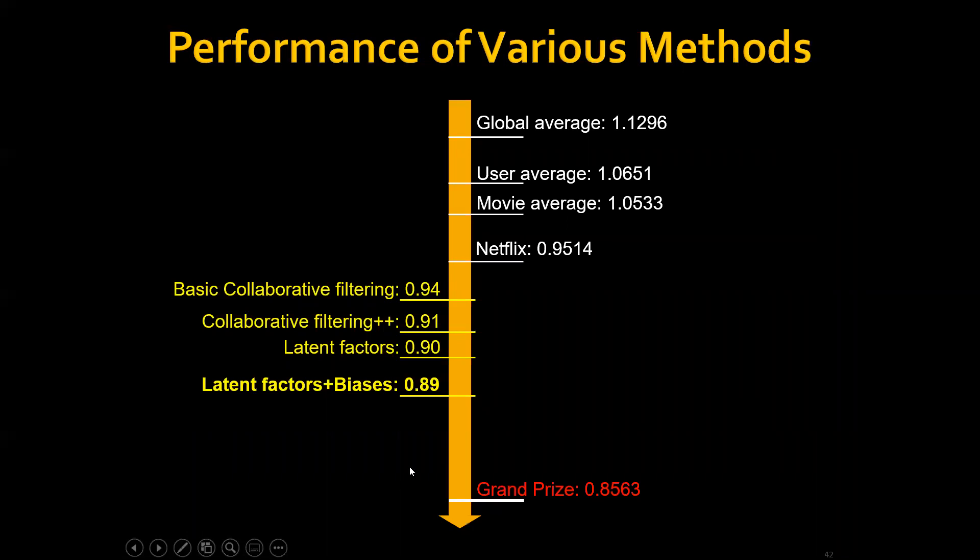To summarize, we are currently here. If we use the basic collaborative filtering, it gives us 0.94 of RMSE. If we include the biases, we can get 0.91. The latent factor model brings down the RMSE a little bit, gives us 0.9.